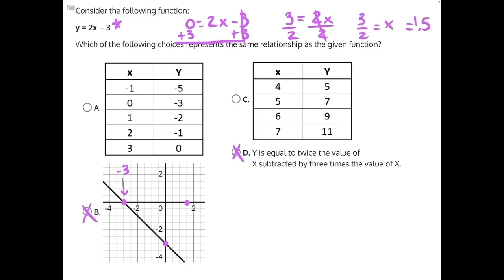Starting with answer choice A, let's do zero and negative 3. We'll have negative 3 is equal to 2 times 0 minus 3. Two times 0 would just give us 0. Zero minus 3 would just give us negative 3. So far it matches, but we need to test a few more points.